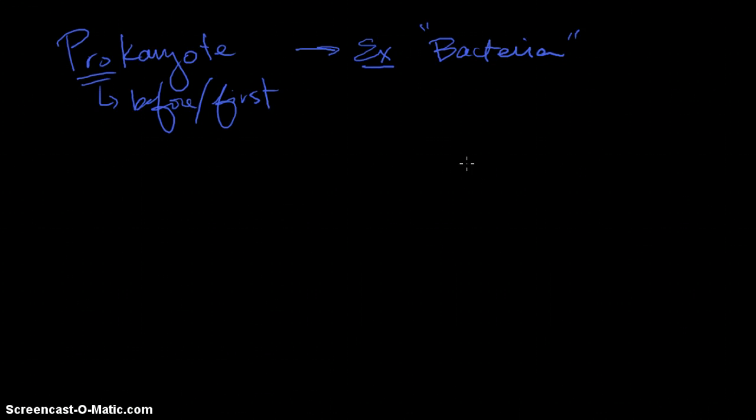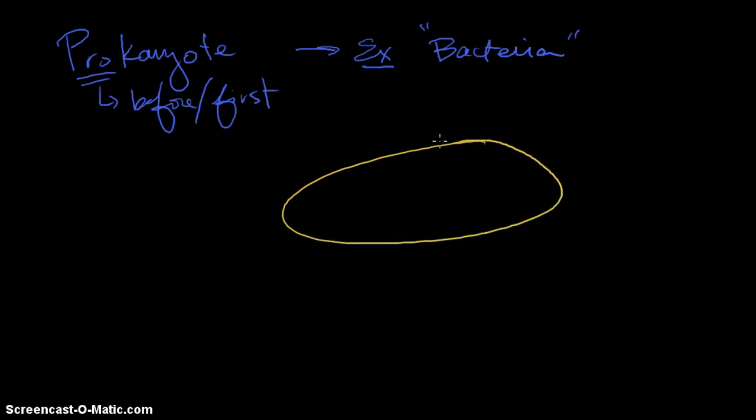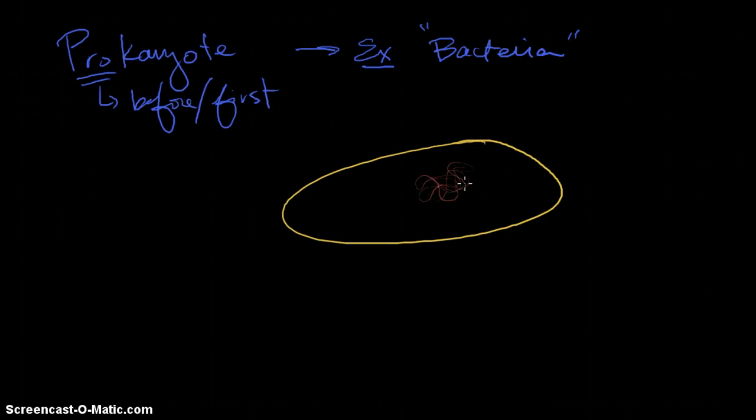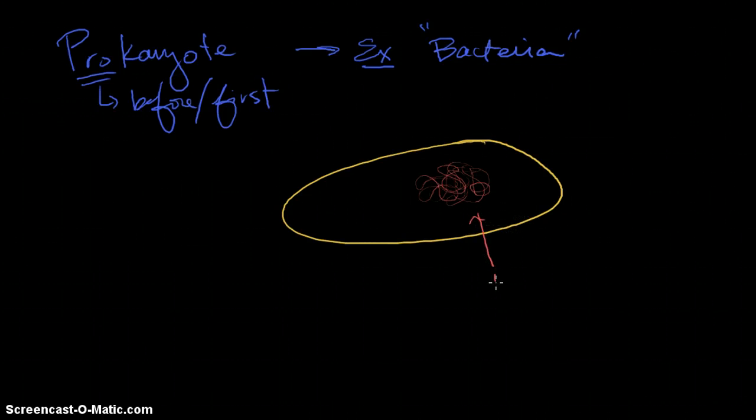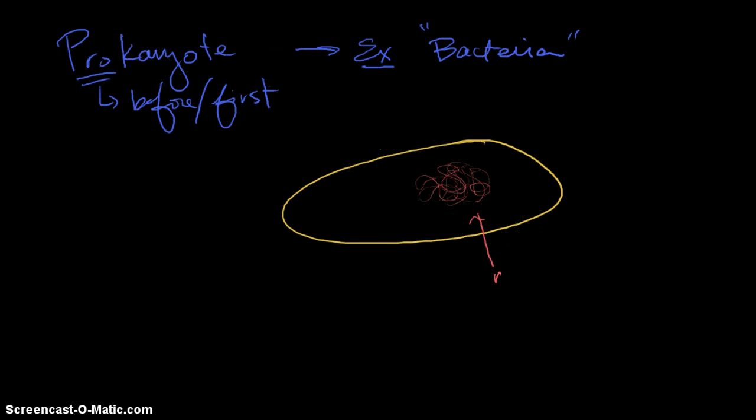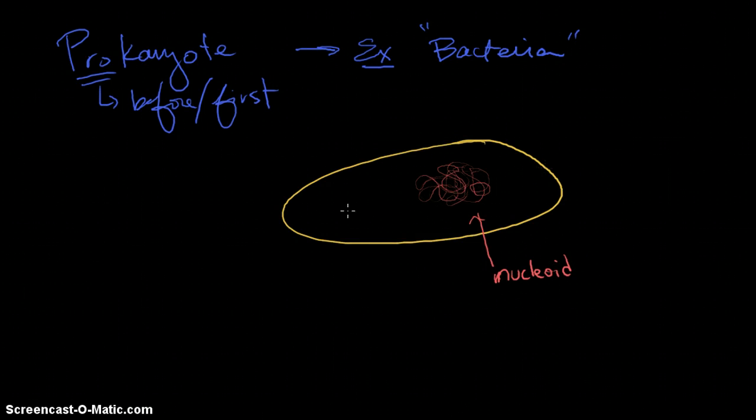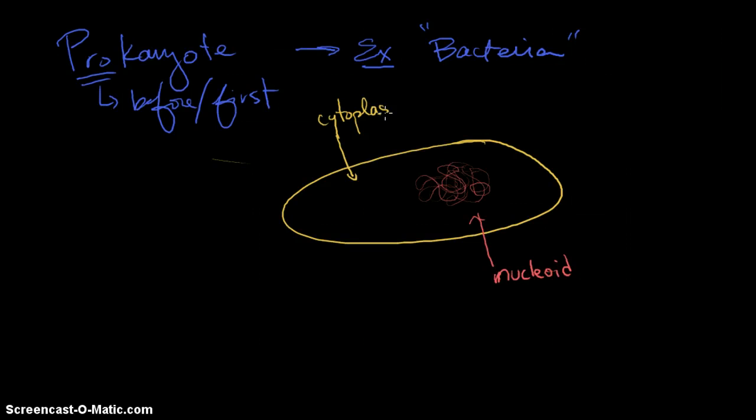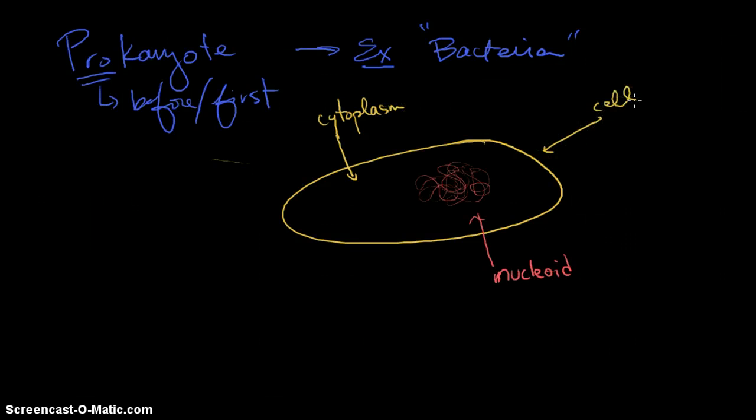This is going to be a terrible sketch, but we've got a bacterial cell, and it's got a couple of things in it that are quite interesting. Inside of it, we've got DNA. Remember all the living cells have DNA. So we've got some free-floating DNA, and this is called a nucleoid. A nucleoid. And we've got ourselves some cytoplasm, and a cell membrane.